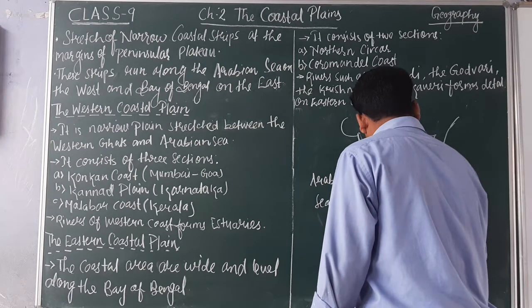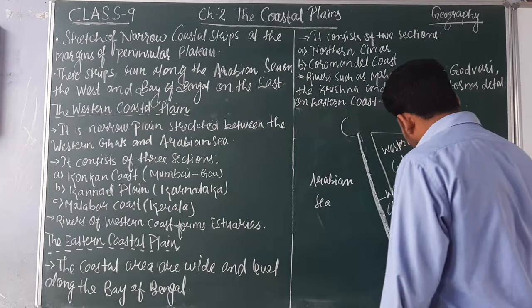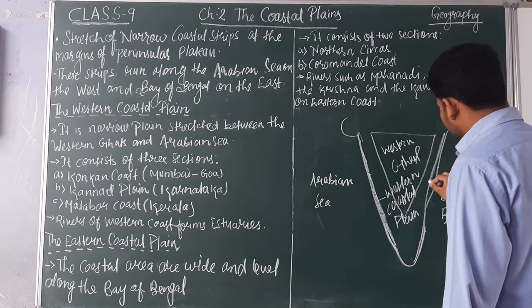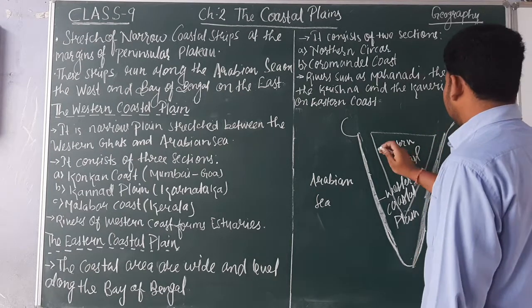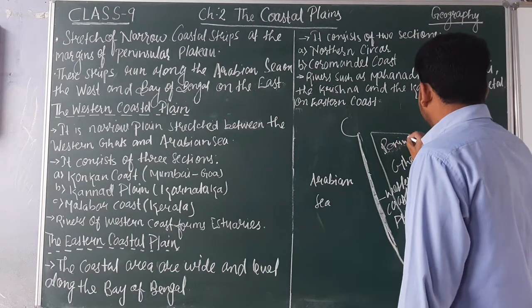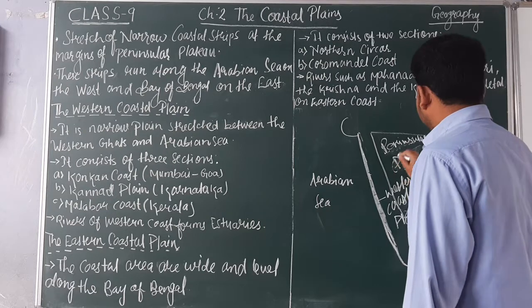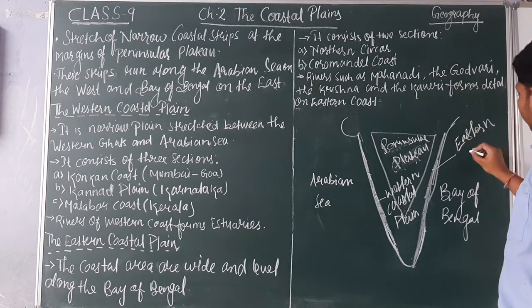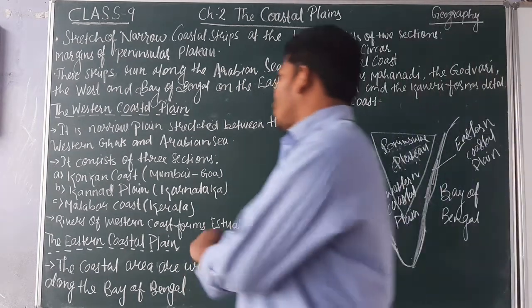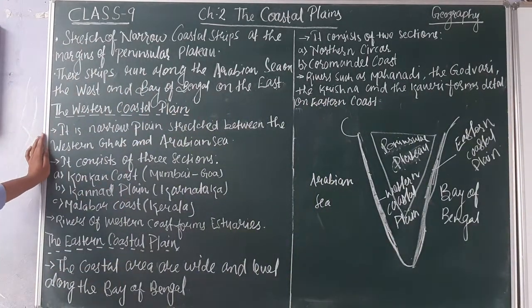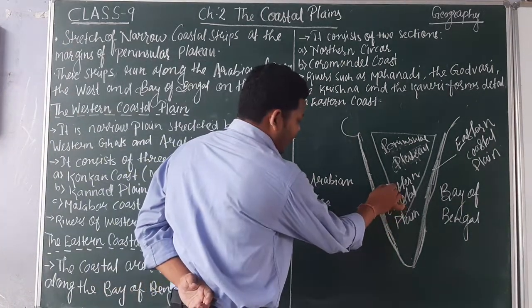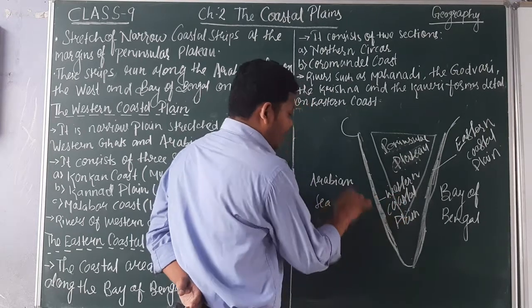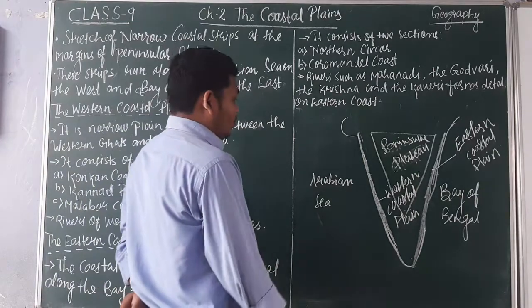Between the Eastern Ghats lies the Eastern Coastal Plain. There is a significant difference between these two coastal plains. The Western Coastal Plain is a narrower plain — it stretches between the Western Ghats and the Arabian Sea.